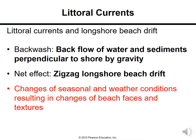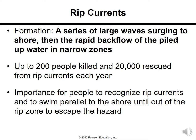Littoral currents and longshore beach drift: the back flow of water and sediments perpendicular to the shore by gravity is called backwash. The net effect — the zigzag longshore beach drift — results from seasonal and weather condition changes. Rip currents occur when a series of large waves surge to shore and there is rapid backflow of piled-up water in narrow zones. Up to 200 people are killed and 20,000 rescued from rip currents each year. It is important to recognize rip currents and swim parallel to shore until out of the rip zone.